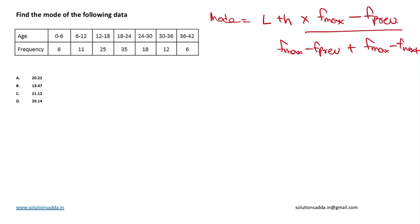The maximum frequency here is 35, and therefore L will be 18. And h is the difference between the age range of the maximum frequency. Therefore, the difference between 18 and 24 will be 6.